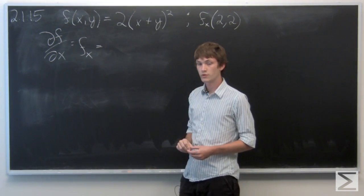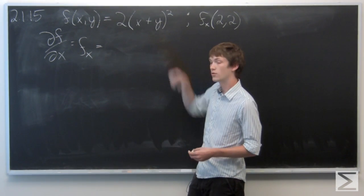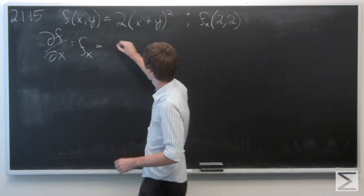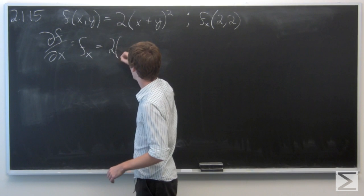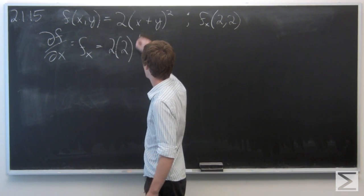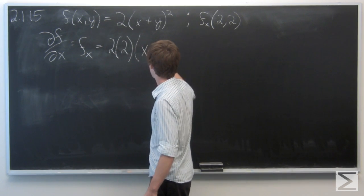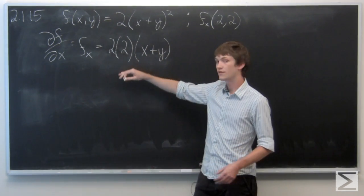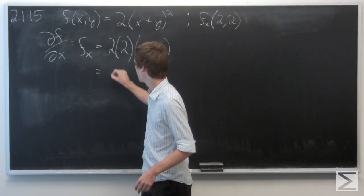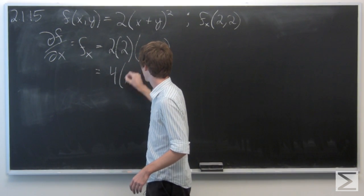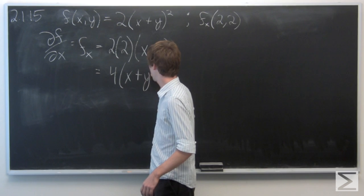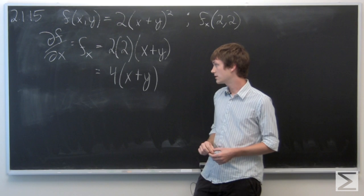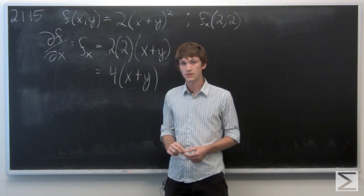So the partial derivative with respect to x — we're going to hold y constant and take the derivative of f with respect to x. We find that the partial derivative with respect to x is 4 times x plus y.